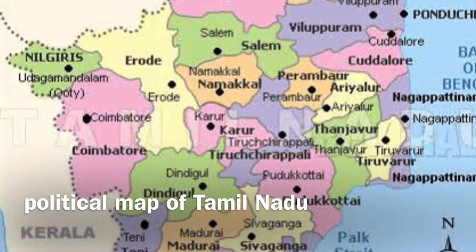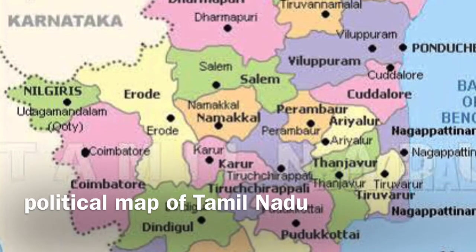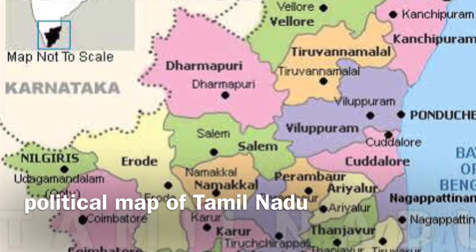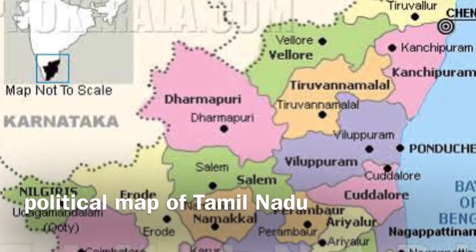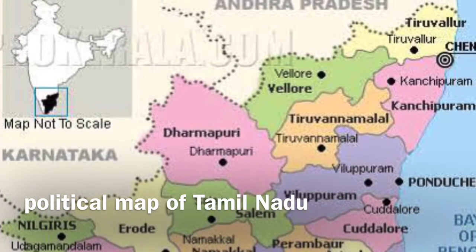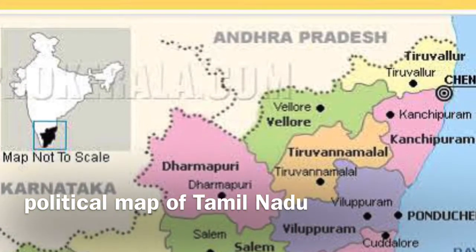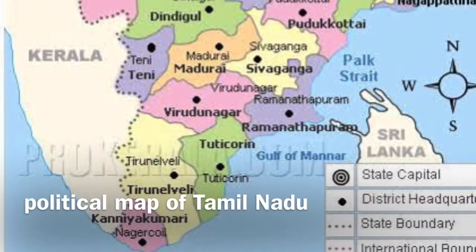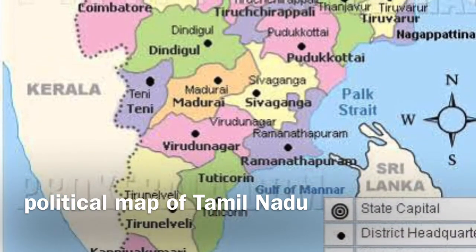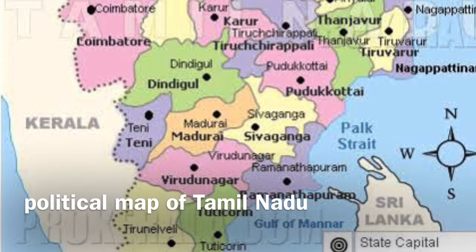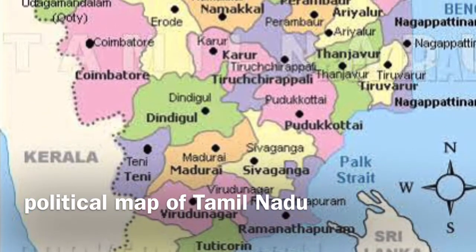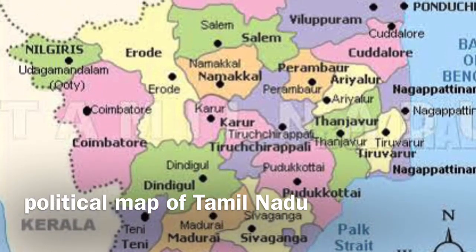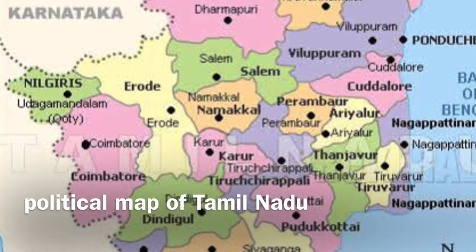Its extremities are: in the east, Point Calimere; in the west, hills of Anaimalai; in the north, Pulicat Lake; and in the south, Cape Comorin. It covers an area of 1,30,058 square kilometers and is the 11th largest state in India, covering four percent of the country's area. Tamil Nadu is bounded by the Bay of Bengal in the east, Kerala in the west, Andhra Pradesh in the north, Karnataka in the northwest, and the Indian Ocean in the south.